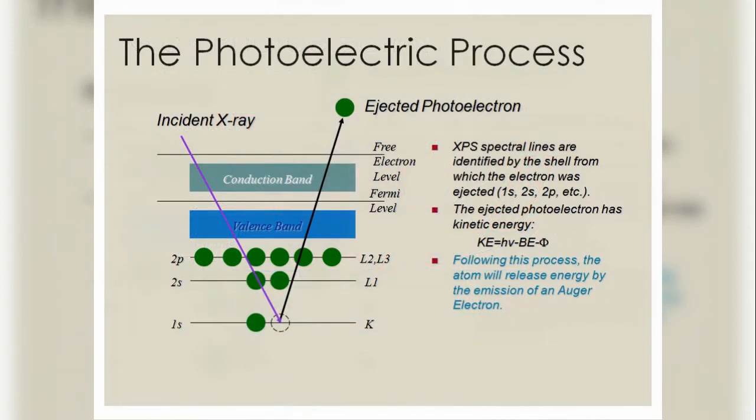So the photoelectron process takes place where the XPS spectral lines are identified by the shell from which the electron was ejected. And the ejected photon has kinetic energy KE = hν - BE - φ.